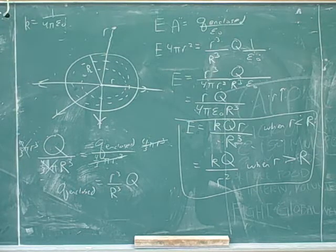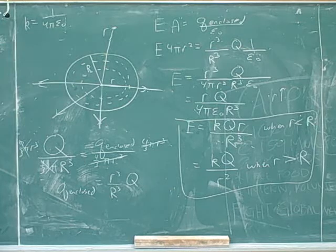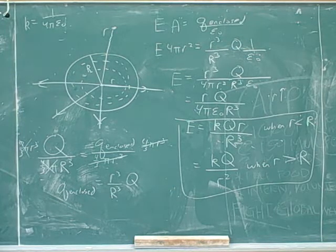They also gave the formula with an epsilon zero. And if you're inside a uniformly charged sphere, it's KQ little r over R cubed. So you can save time by just looking up these formulas.